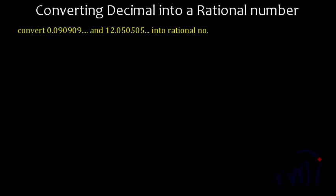Hi, so we have one more problem, actually two more problems. Here we have to convert 0.090909 repeating itself infinite times and 12.050505 with 05 repeating infinitely into rational numbers.